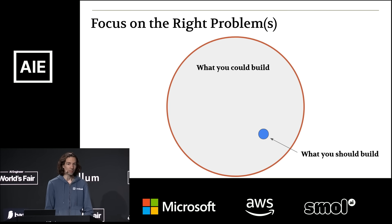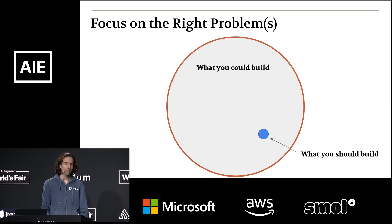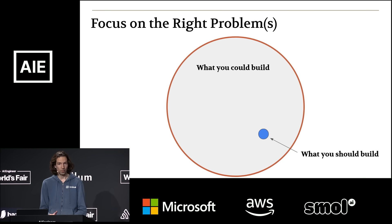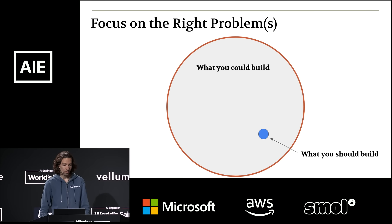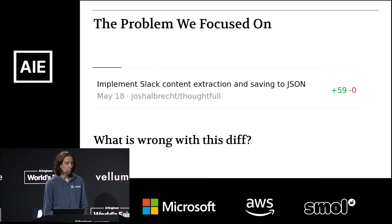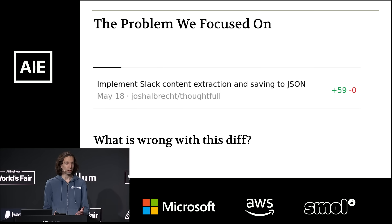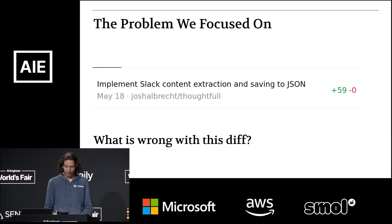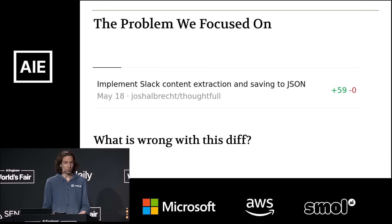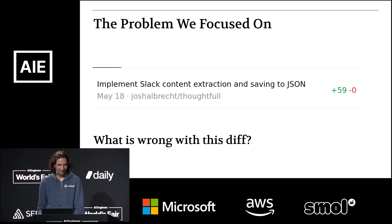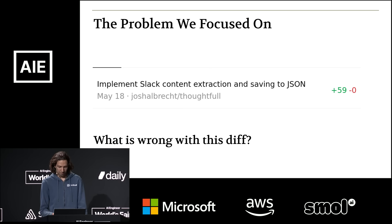Just like you wouldn't want to make your own database, I don't think we want to spend time on problems that are going to get solved anyway. Instead, we want to focus on the particular part of the problem that really matters for our business. At Imbue, the problem we're focusing on is basically this: what is wrong with this diff? You get a coding agent output that says "I've added 59 new lines" — are those good? Right now you have an awkward choice between reviewing every line yourself or just hitting merge and hoping for the best.